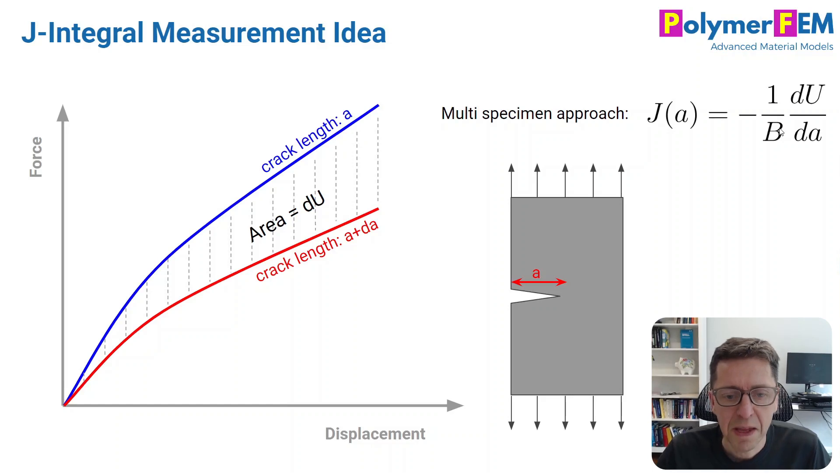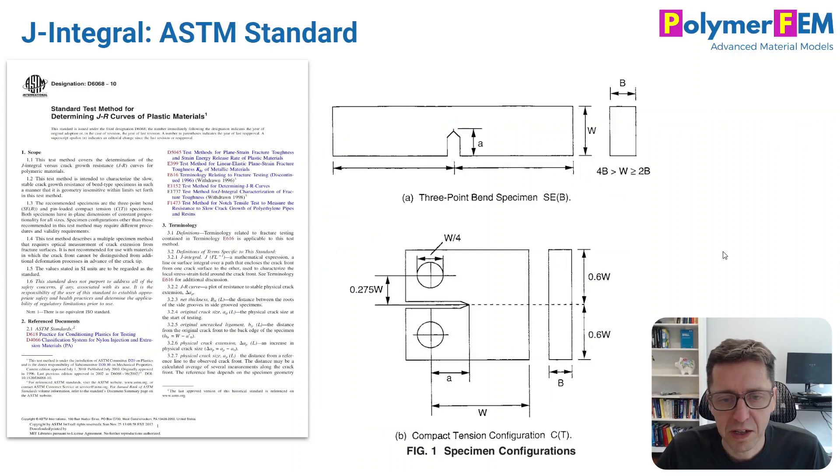You can repeat this type of testing with different crack sizes, and that will give you a whole map of the J value for a given material. That's exactly what the ASTM standard is talking about. Here is one that talks about the J-integral - in fact, the J-resistance curves for plastic materials. If you're interested in doing these tests, multiple labs can do it, but you can also read the standard and do it yourself.